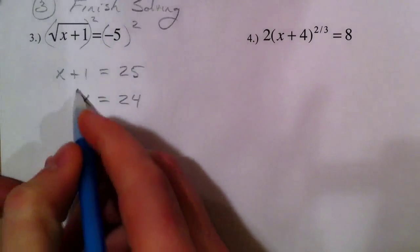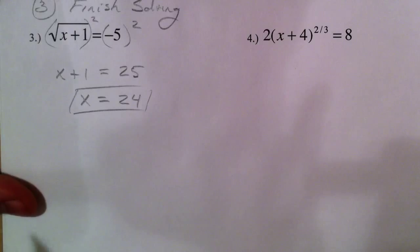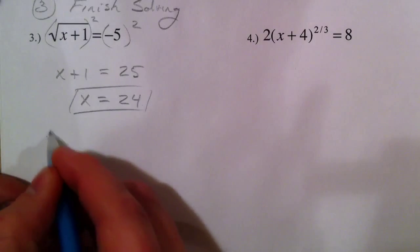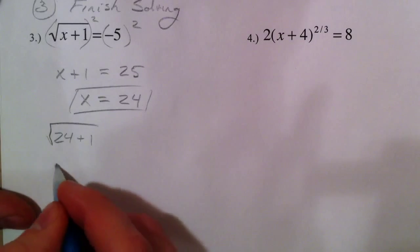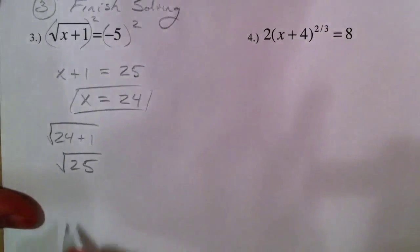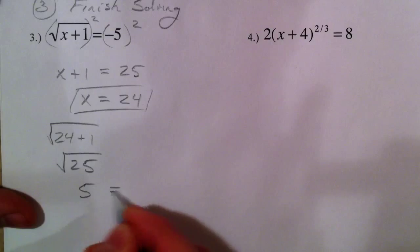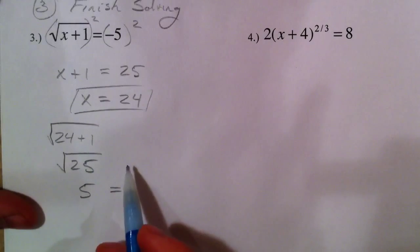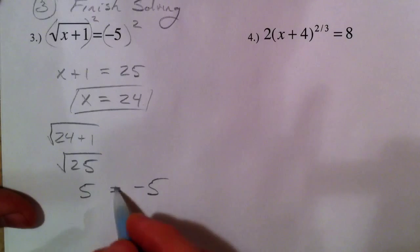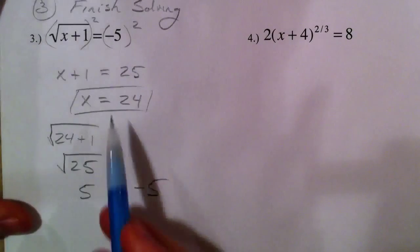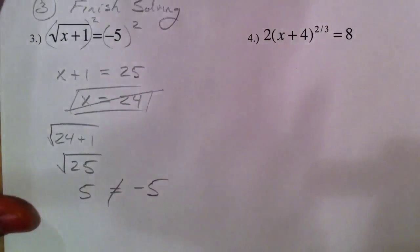When you check your answer, we already circled it or something because we think it's the right answer, but when you check it, 24 plus 1, square root of 25, square root of 25 is 5, but this is supposed to be equal to the other side, which was negative 5. 5, negative 5, not the same thing. So, 24, not an answer.